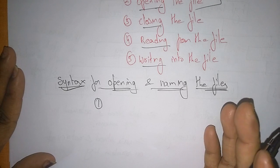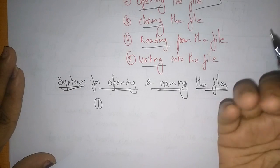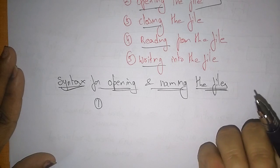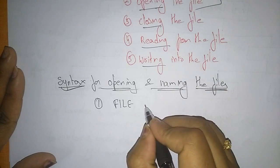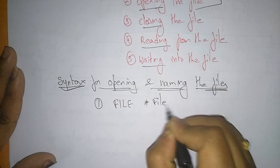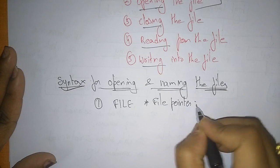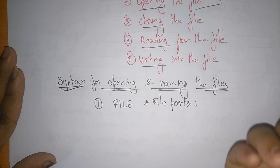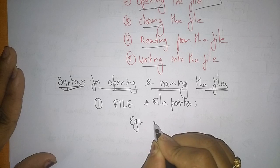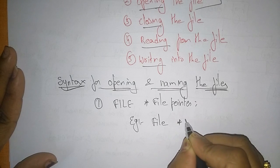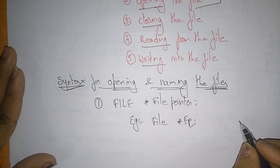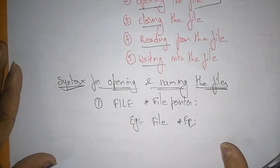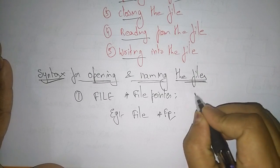To open a file you need a file pointer — it indicates from where we have to access the file and where the file is present. Everything will be decided by the file pointer. FILE is the type, and you declare a pointer that points to the file which you want to open — for example, file pointer fp.